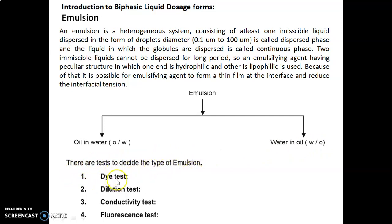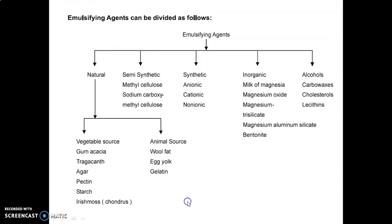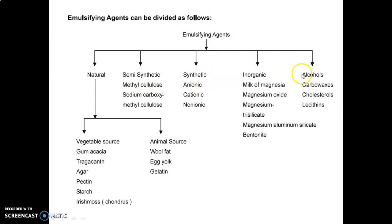There are four tests: the dye test, dilution test, conductivity test, and fluorescence test. Emulsifying agents can be divided as follows: natural, semi-synthetic, synthetic, inorganic, and alcohols. In natural, there are two types — vegetable source and animal source. In vegetable, we have gum acacia, tragacanth, agar, pectin, starch.